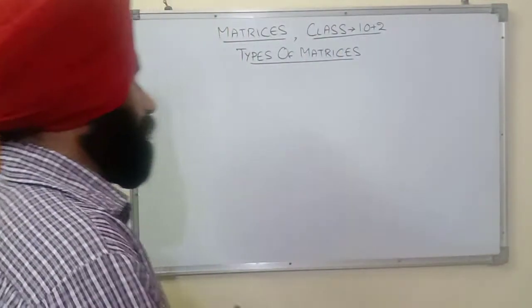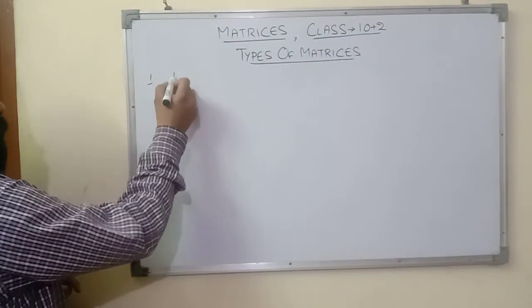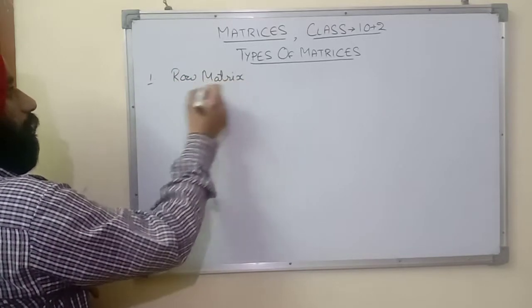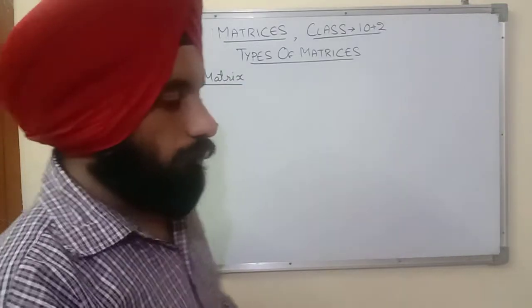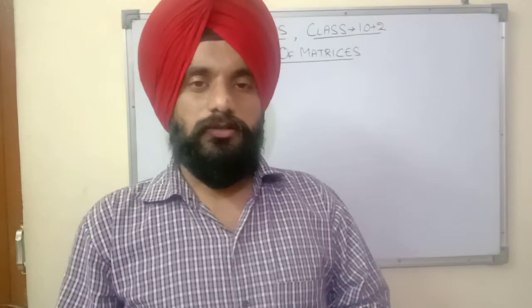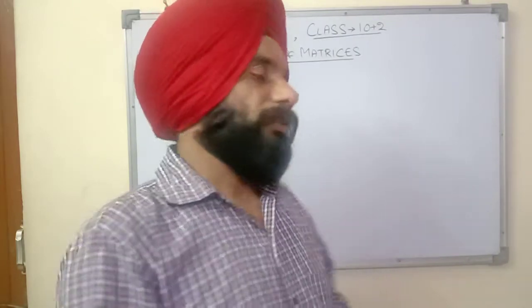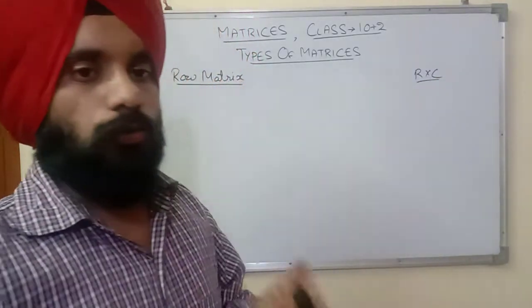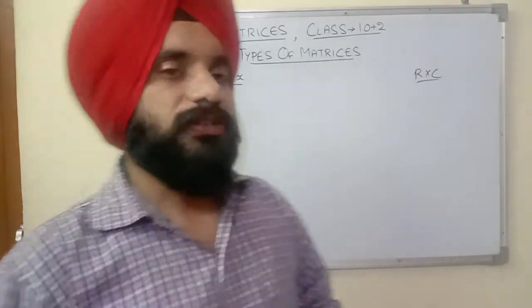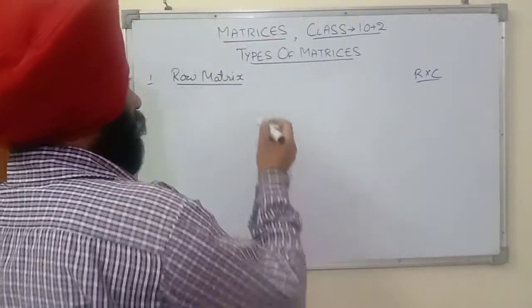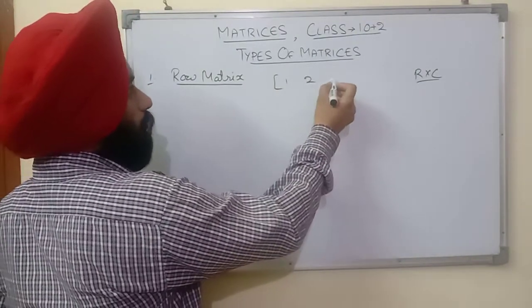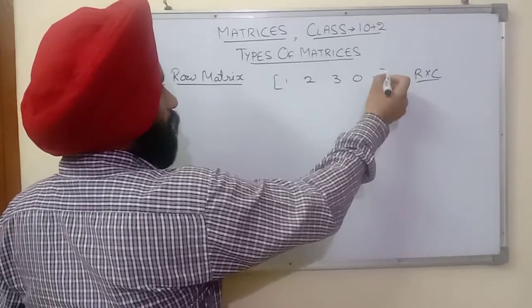The first type is the row matrix. As you learned in the previous video, the order of a matrix is written as rows multiplied by columns. A row matrix is a matrix in which there is only one row and as many columns as needed. For example: [1, 2, 3, 0, -1] — this is a row matrix.